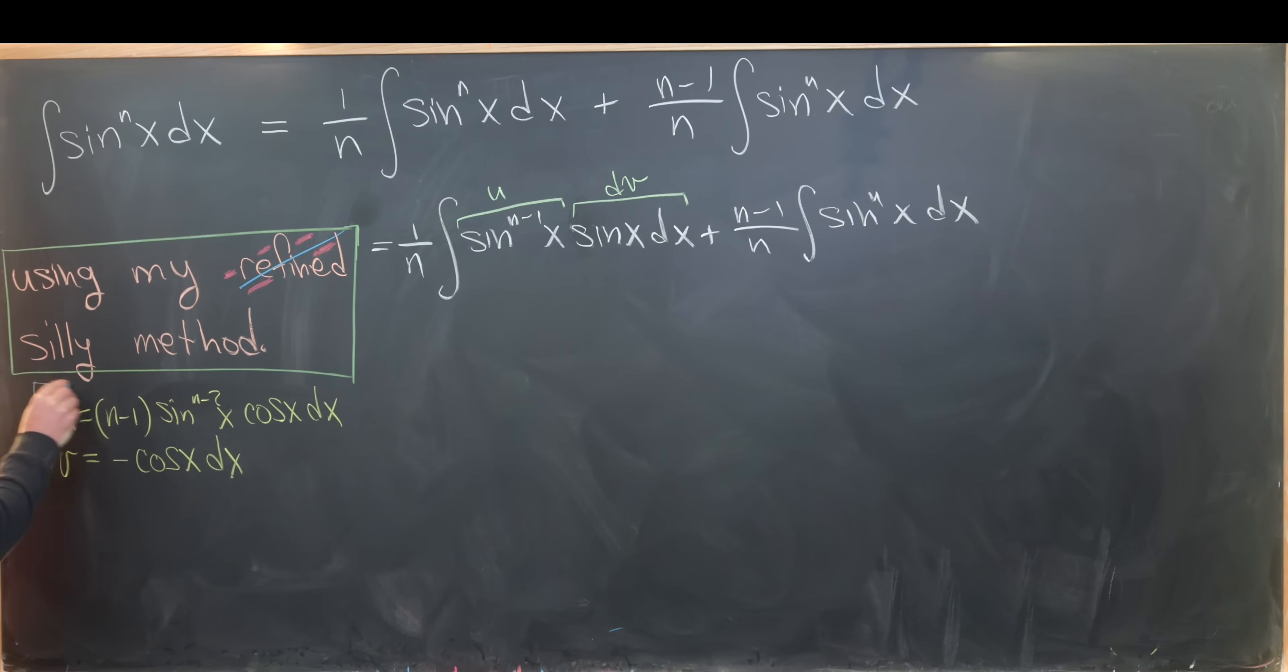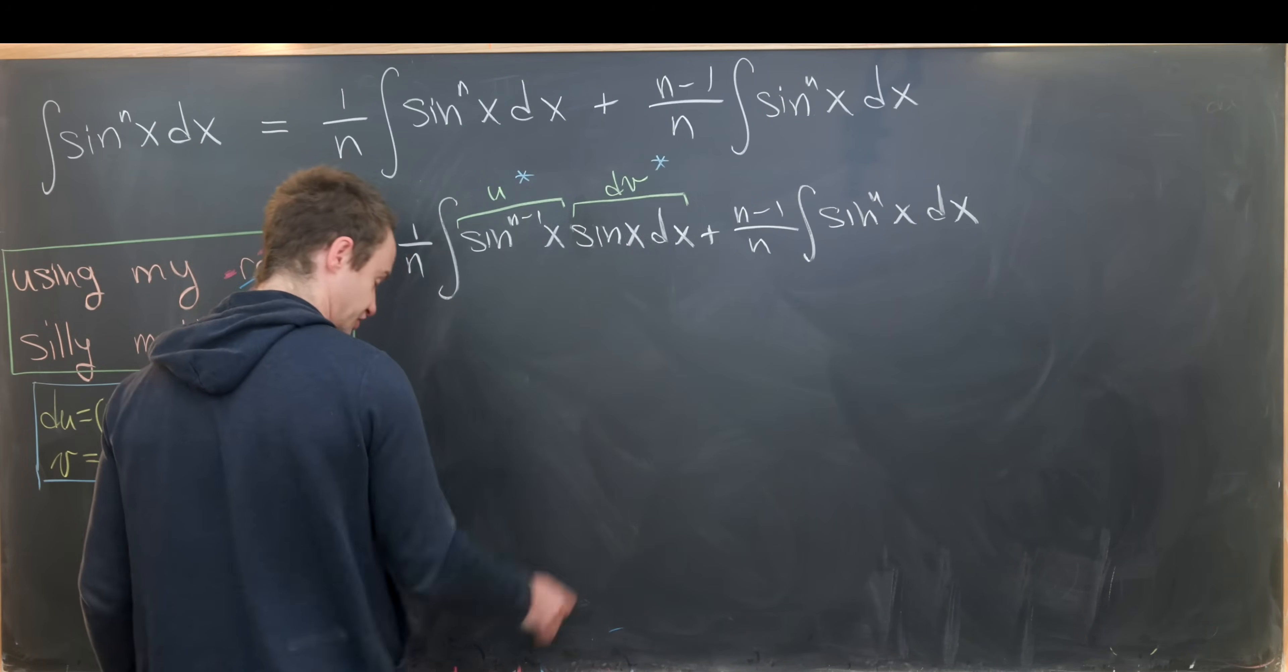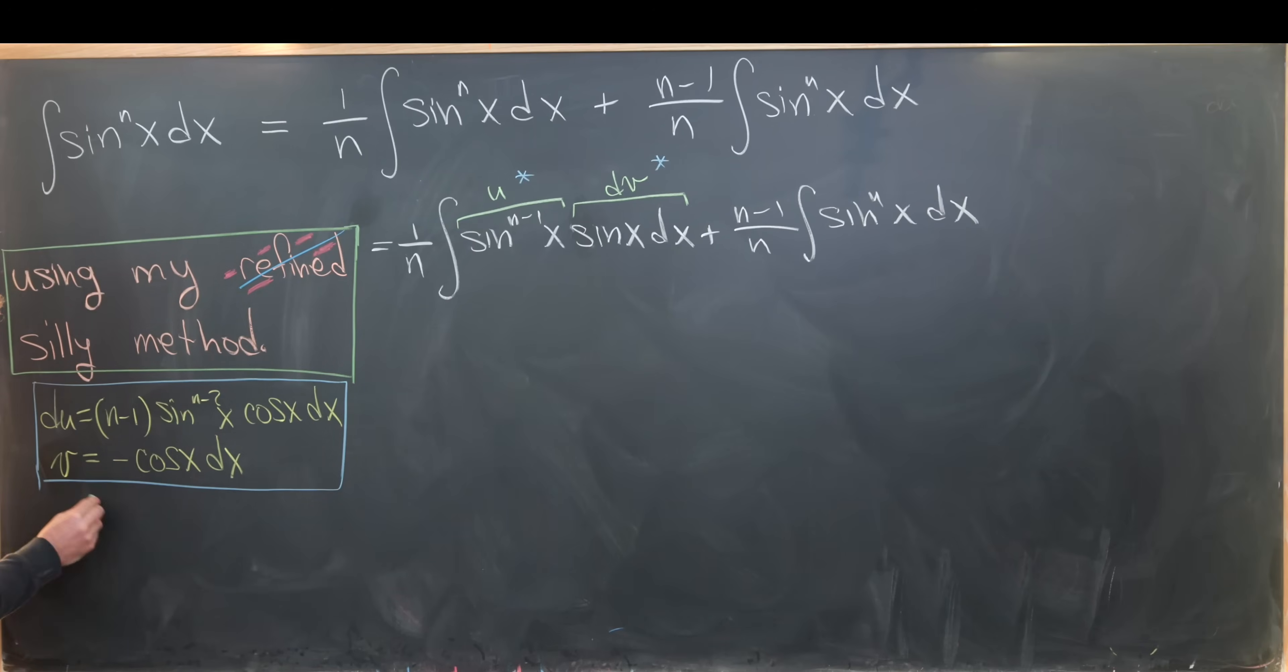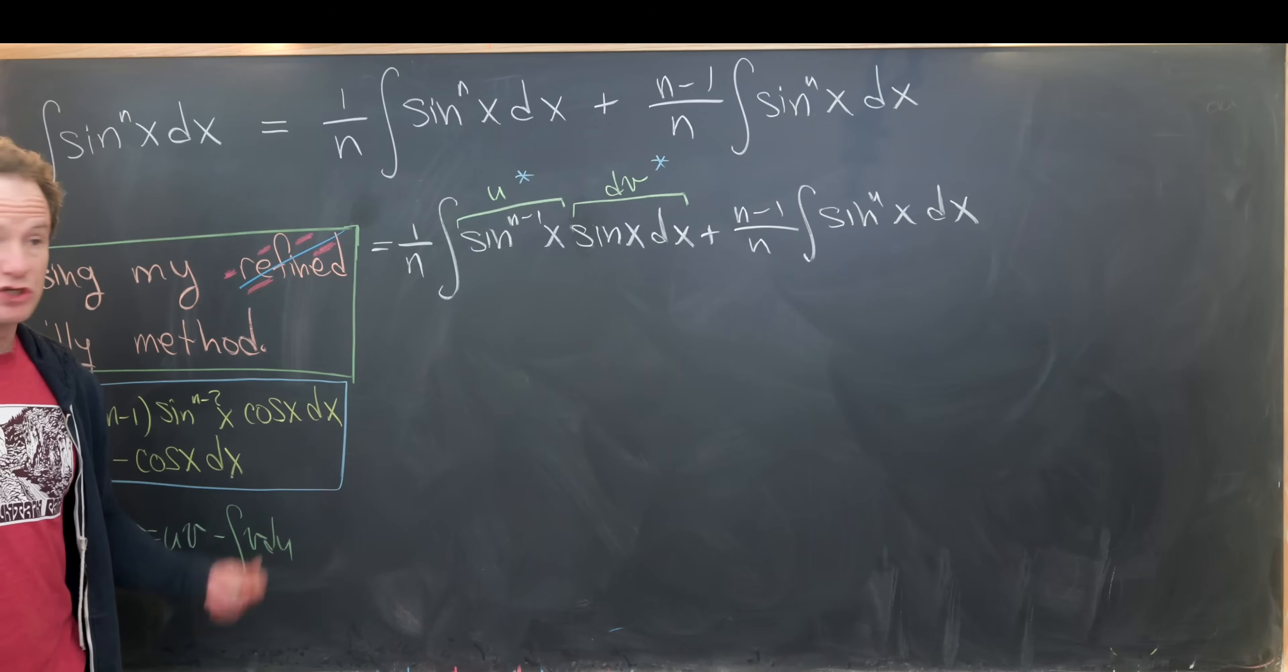Okay, so between this stuff right here, which I've boxed in blue, and these two substitutions over here, which I starred in blue, along with the integration by parts formula, which says the integral of u dv is the same thing as u v minus the integral of v du, we can break this first integral into two parts.